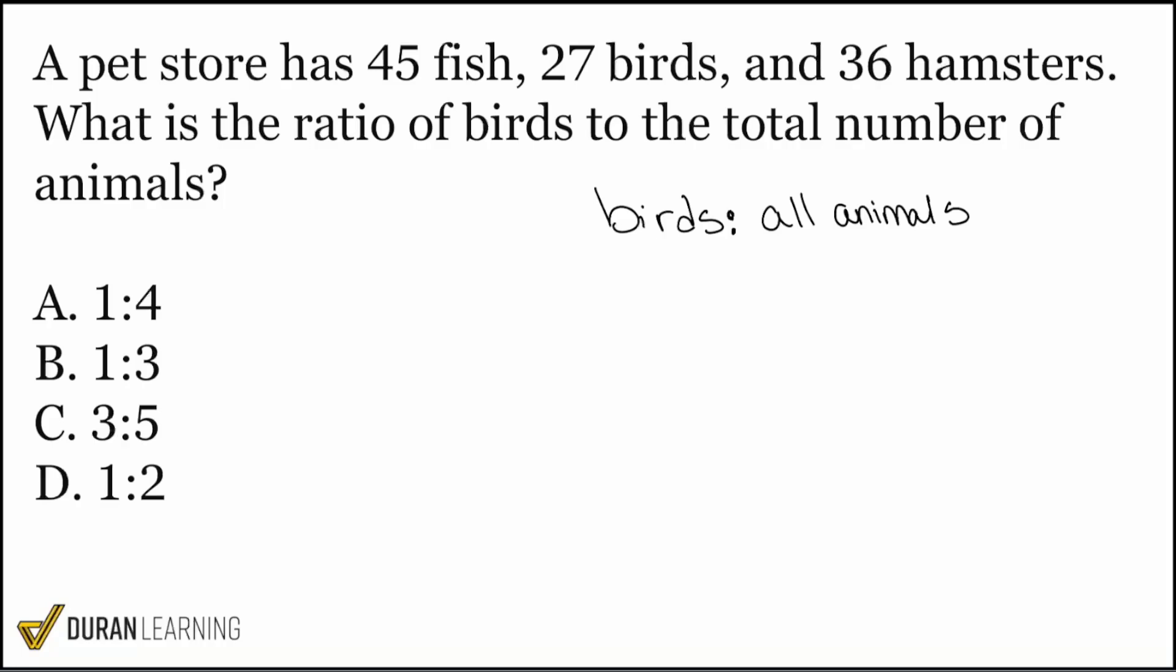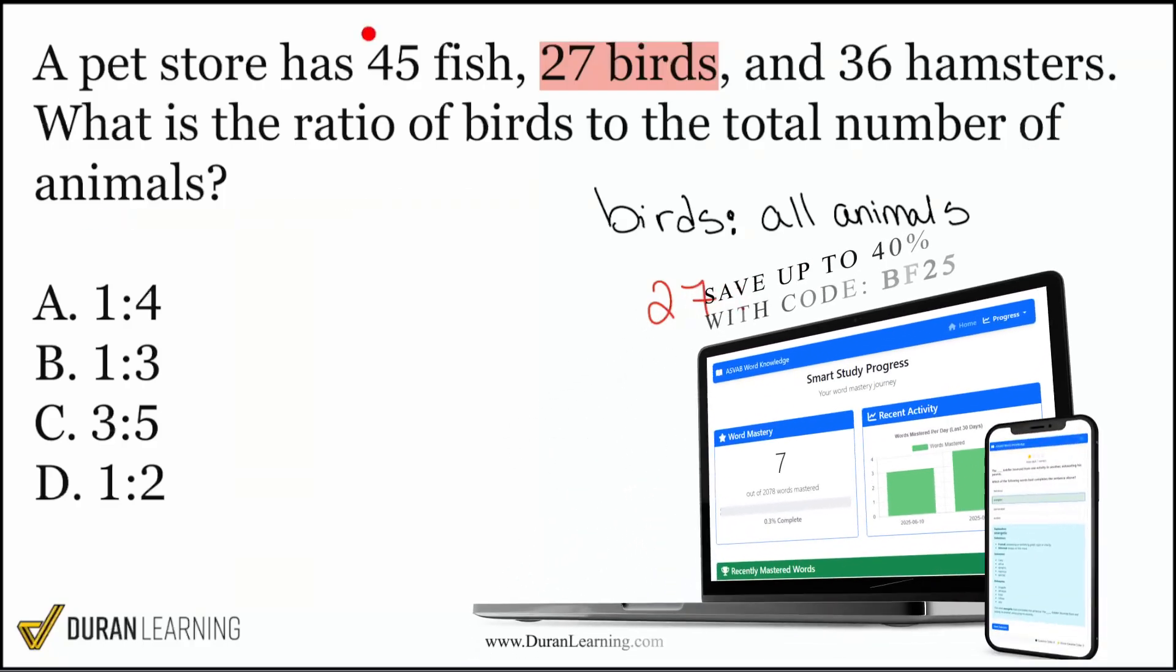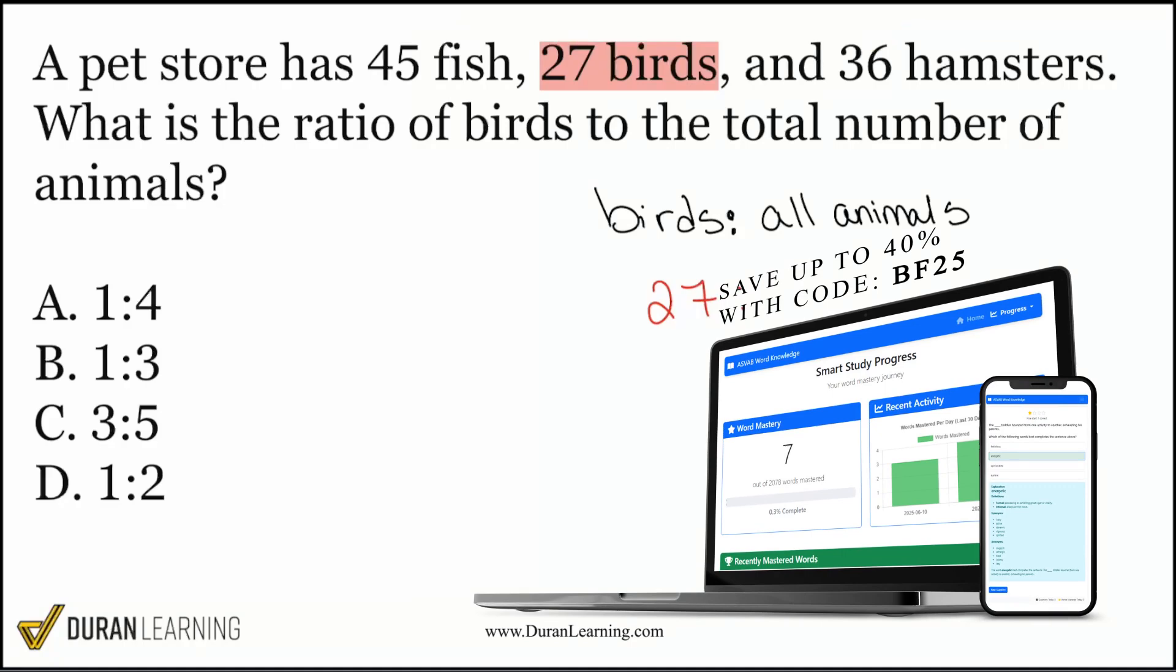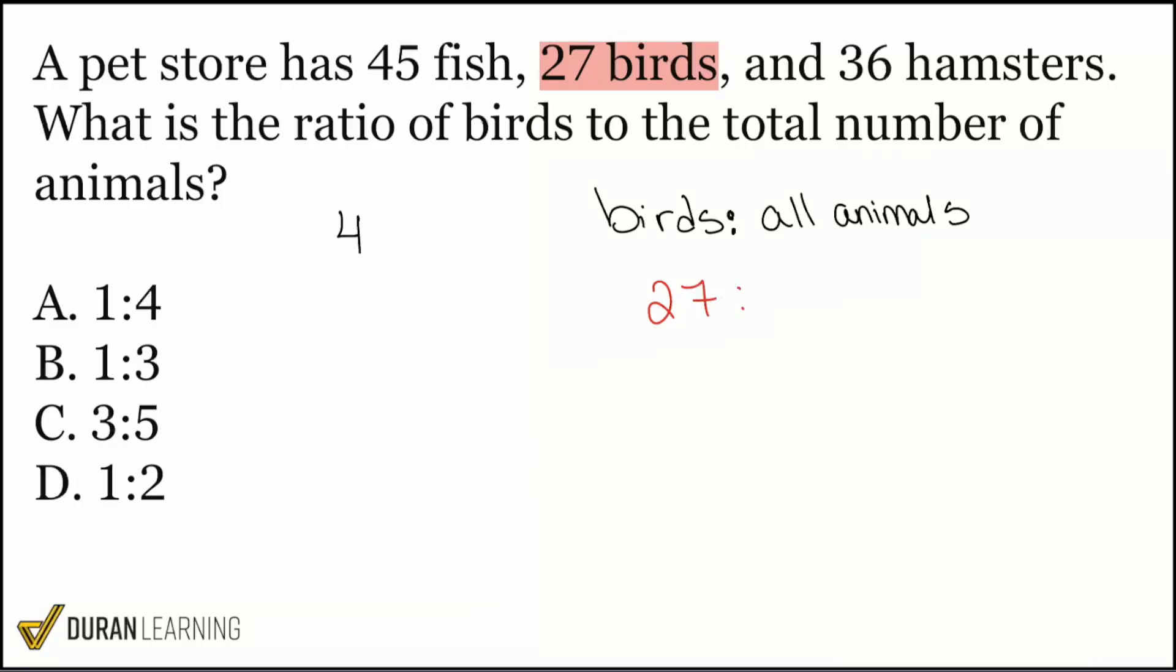So when we do that, everybody, when we try to write this ratio, we do have a number for the number of birds, that's going to be right here, 27. So when I write that down, that's exactly where it goes under birds. Now from here, everybody, which of the remaining numbers belongs for all animals? Should it be 45? Should it be 36? Or should it be a combination? Yeah, in this case, when we're saying total number of animals, well, we're going to take the animals that we see 45 for fish, 27 for birds, 36 for hamsters. And we're going to grab the three of those and add them together.